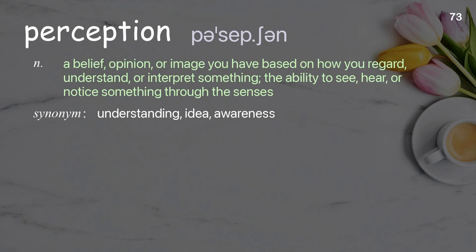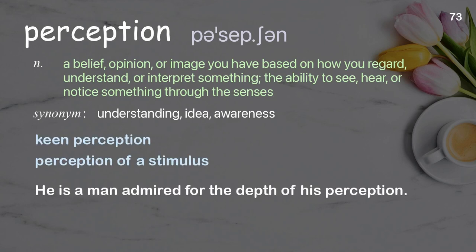Perception. A belief, opinion, or image you have based on how you regard, understand, or interpret something. The ability to see, hear, or notice something through the senses. Examples: keen perception, perception of a stimulus. He is a man admired for the depth of his perception.